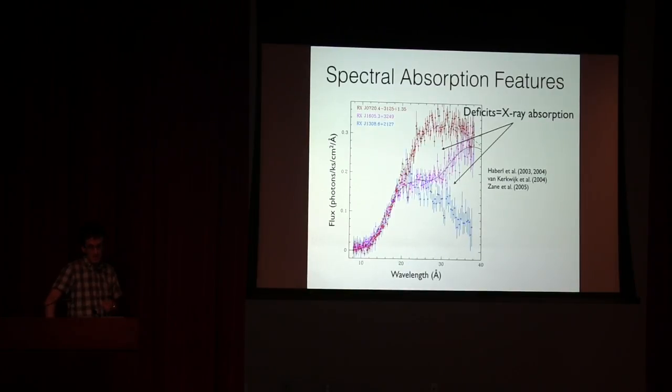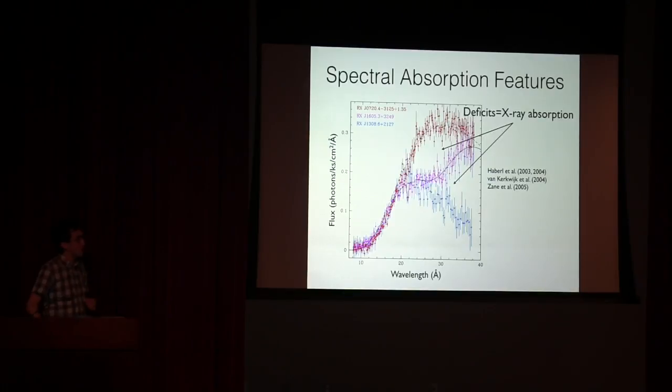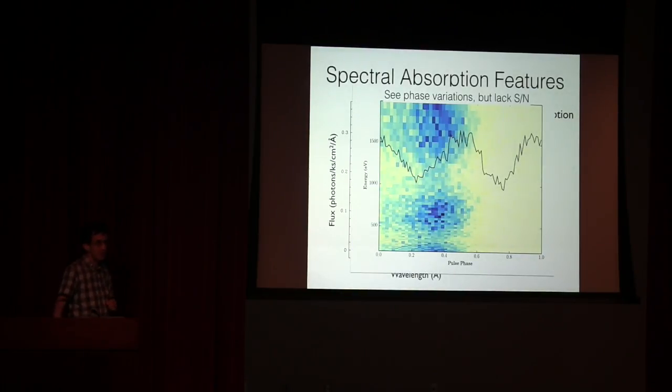That's something that has eluded a comprehensive understanding for as long as they've been seen. These x-ray absorption features vary with pulse phase in a way that we don't really understand. No simple mapping of the types of absorption features that we expect to occur in these objects really makes sense to explain the population. Not a cyclotron line, not an atomic transition, nothing like that. There's no one answer that we can use to give an understanding for the whole population.